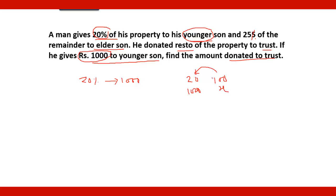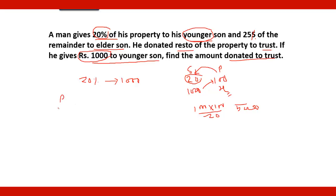For a share of 20 rupees there is a property of 100 rupees, so for a share of 1000 rupees: 1000 multiplied by 100 divided by 20 equals 5000 rupees. So the total property is 5000 rupees.